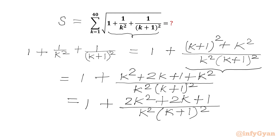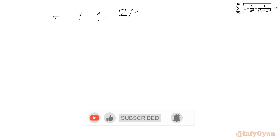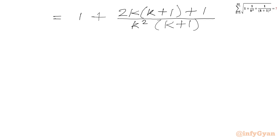Now we are going to take 2k common from the first two terms of the numerator on the right hand side. So I can write this will be equal to 1 plus, where 2 is common and k is also common — so let us take 2k common. In the bracket we will write (k+1), then we have plus 1 left. In the denominator we will write k squared times (k+1) whole squared.